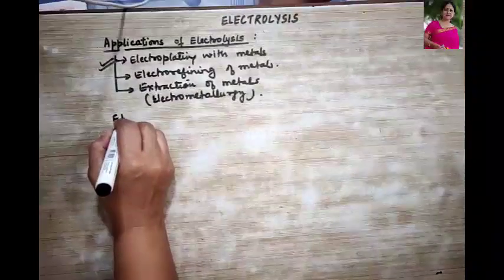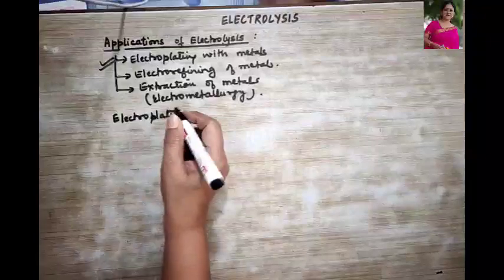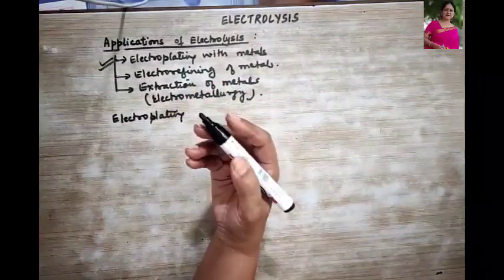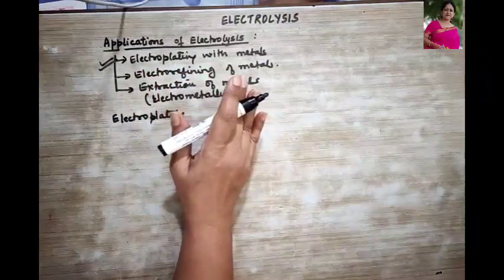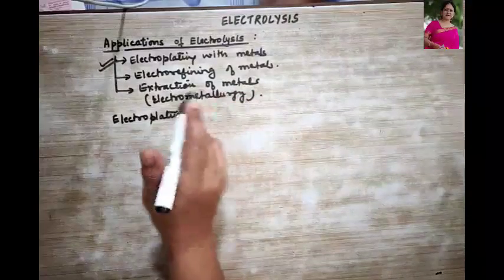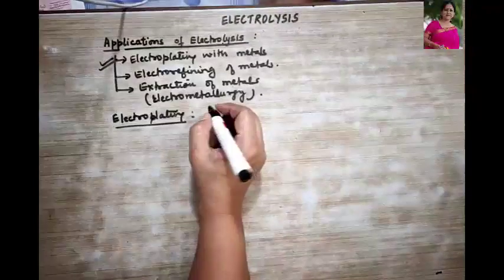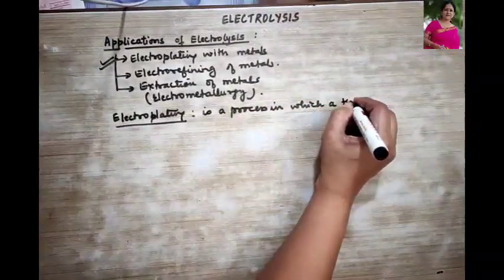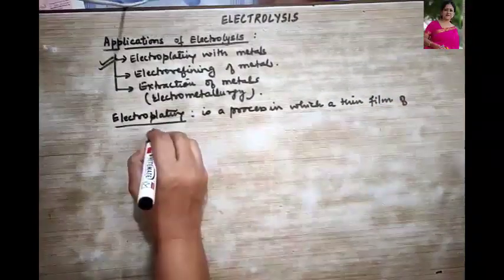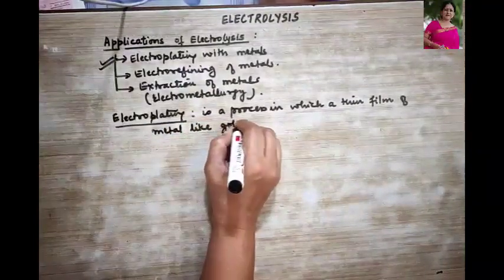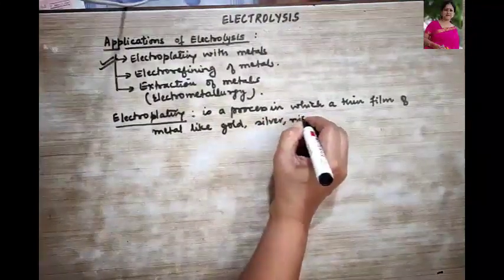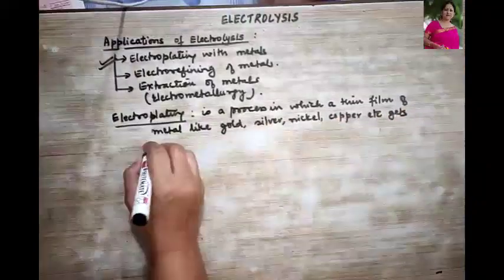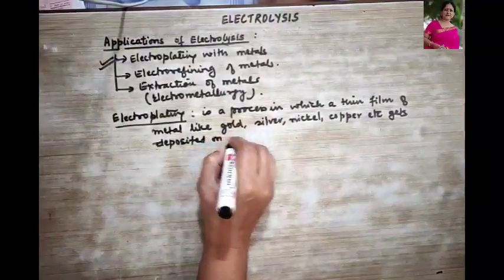Let us begin with electroplating. Electroplating is a process in which a very thin film of metal — maybe gold, silver, copper, or nickel — gets deposited on another inferior metallic article with the help of electricity. This is called electroplating.